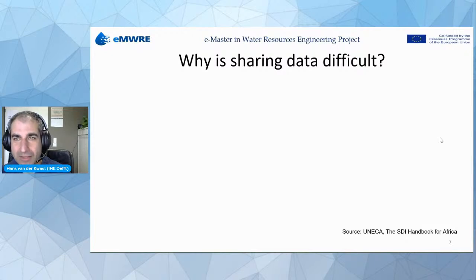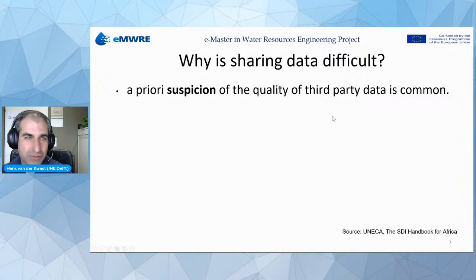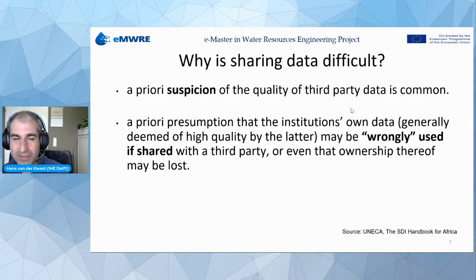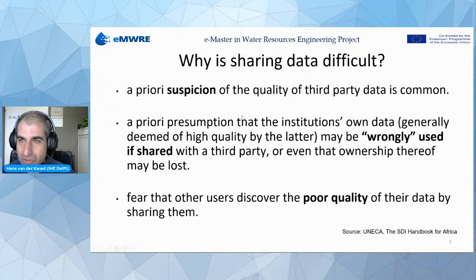So that all sounds great, but why is sharing then difficult? First, there's often a priori suspicion of the quality of data from others — if it's from others, we cannot really trust it; it's better to collect it ourselves. On the other hand, there's also the opinion that if we share data with others, they will wrongly use it. This is especially the case in certain countries where data providers are afraid that others will use it in the wrong way and they will lose face. These same people also fear that other users will discover the poor quality of their data by sharing it.